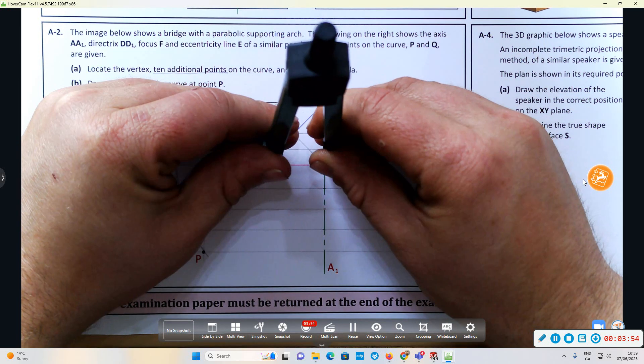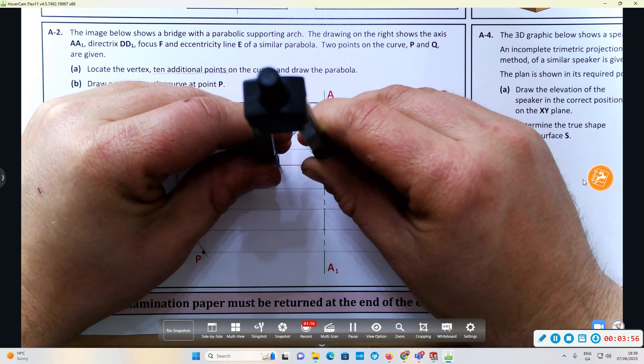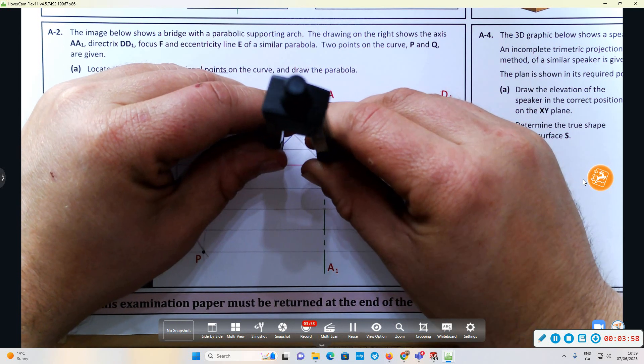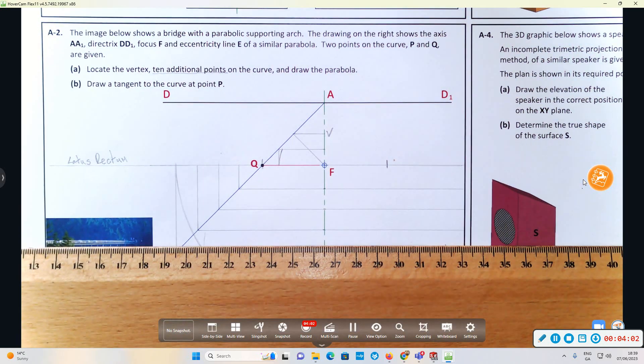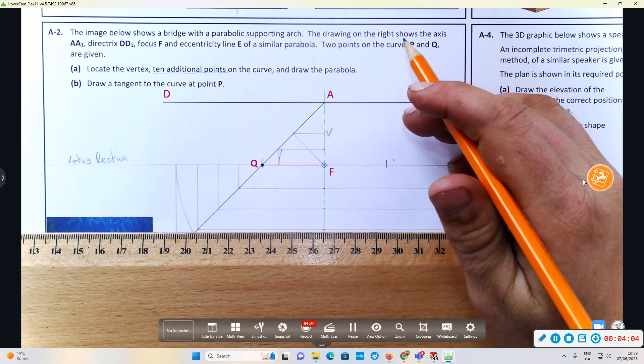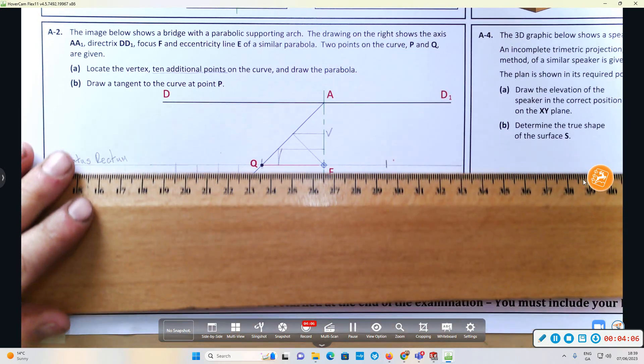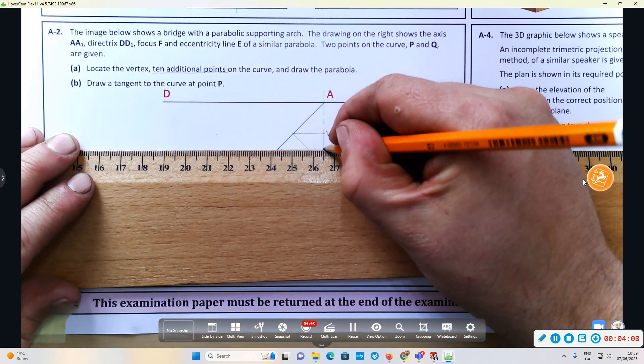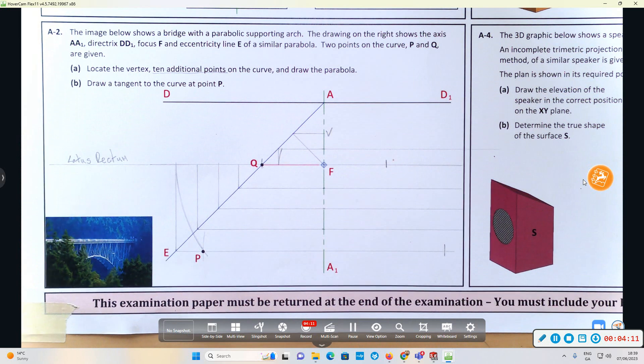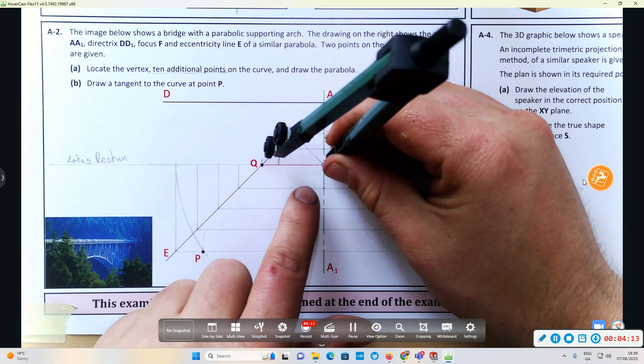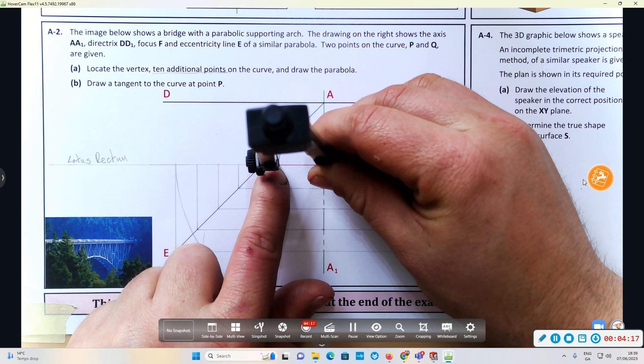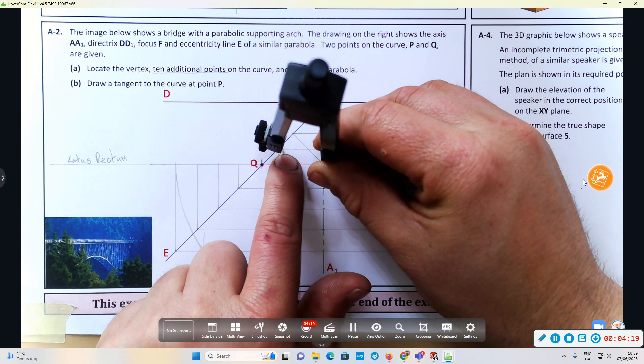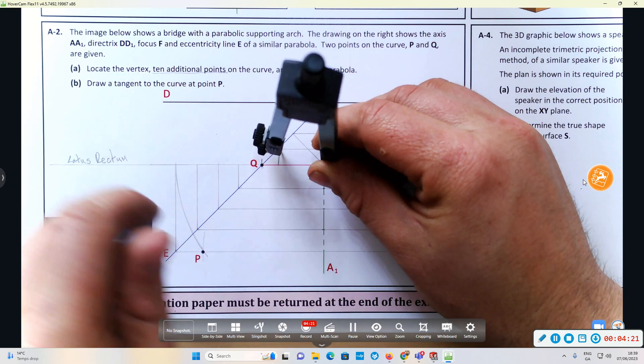I'm going to get the compass and put it onto the line that's parallel to the axis and swing back to the line that's parallel to the directrix. I'm going to go to the next one and where that hits, there's a point on the parabola. I've brought my compass to this line that's parallel to the axis and swing it back to the line that's parallel to the directrix.